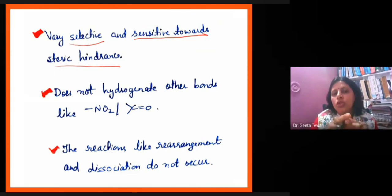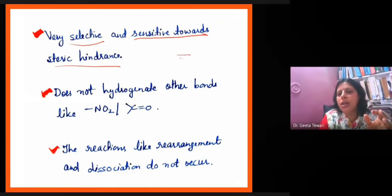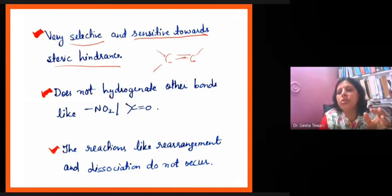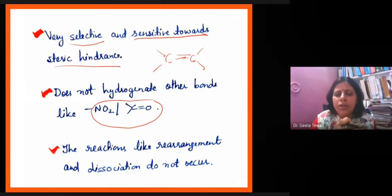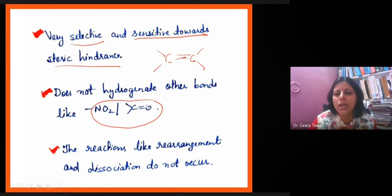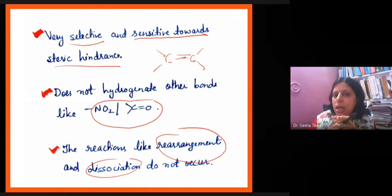It is very selective, so selectively we can use the homogeneous catalytic process. In this process, only the carbon-carbon double bond will be hydrogenated. Other kinds of double bonds will not be hydrogenated — like NO₂ and C=O, they will not be hydrogenated. There will be no rearrangement reactions or dissociation reactions in this process.